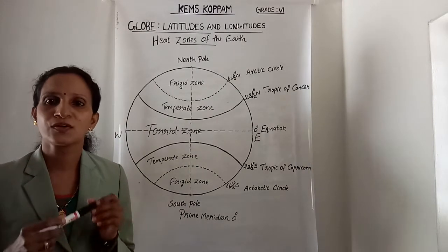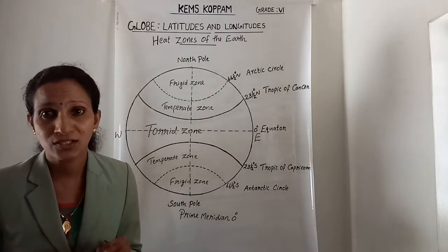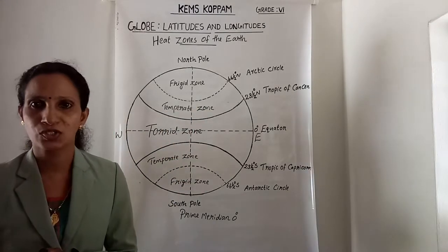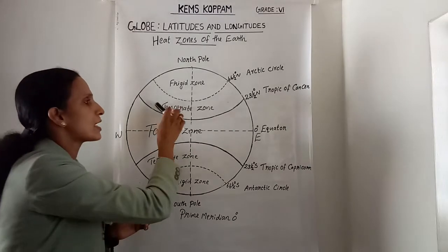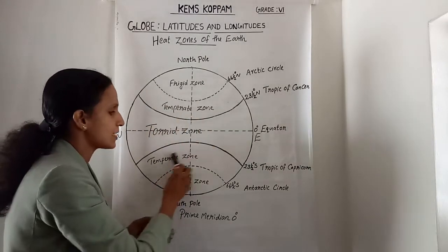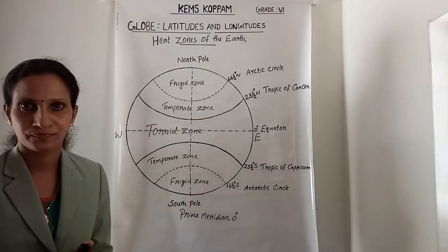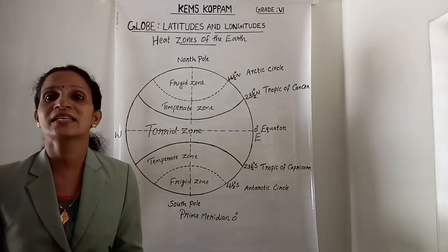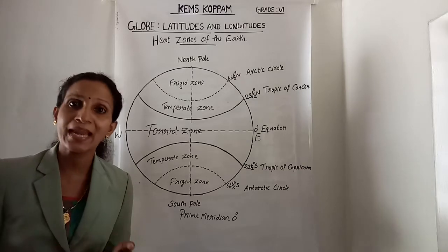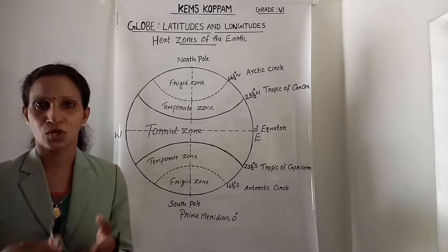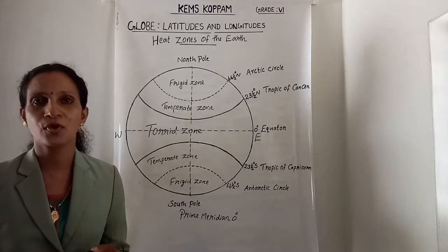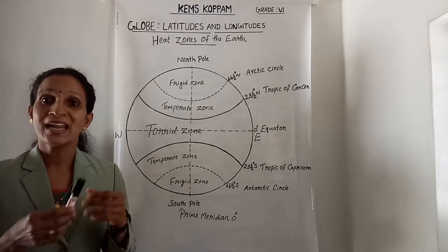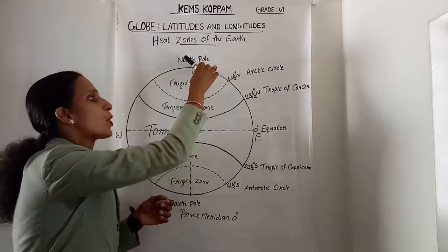These areas are therefore called the Temperate Zones — the North Temperate Zone and the South Temperate Zone. The midday sun never shines overhead beyond the Tropics, so the angle of the sun's rays goes on decreasing towards the poles.